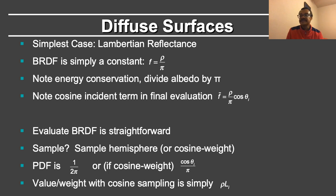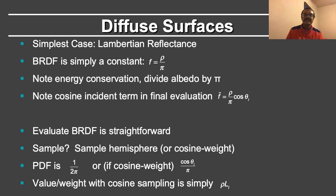Evaluating the BRDF is straightforward. What about sampling? You can either uniformly sample the hemisphere or you can cosine weight. The PDF function, if you are uniformly sampling the hemisphere, is simply 1 over 2 pi, or if you are cosine weighting, it is cos theta over pi, and we have seen this earlier. Finally, instead of doing eval divided by PDF, we can also define a value function, which for cosine sampling would cancel out the cosine term, and therefore you are simply left with the diffuse albedo rho multiplied by the incident light energy Li from the given direction.